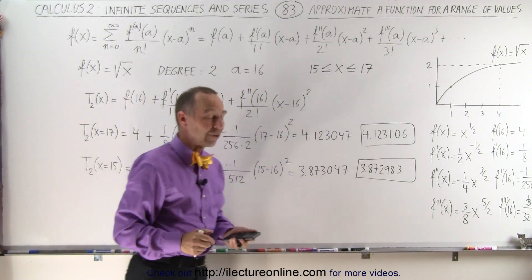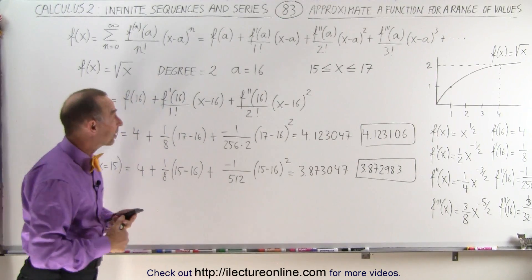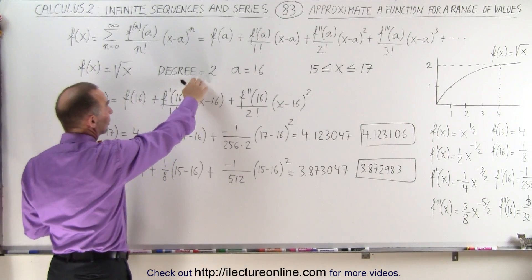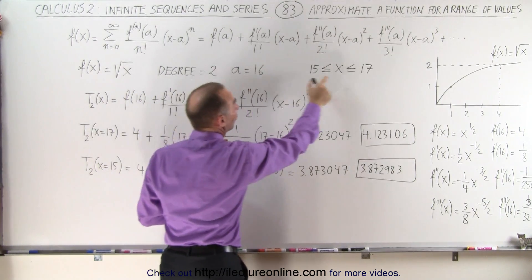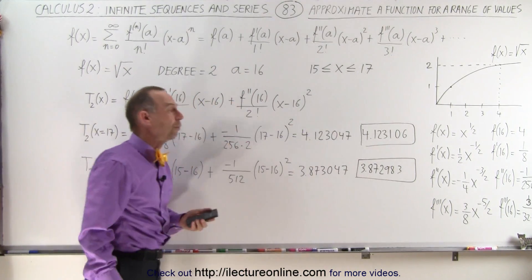So you can see very, very close by picking the correct number of terms, degree 2, only three terms, but picking the correct a, a number very close to the range that we're looking for.